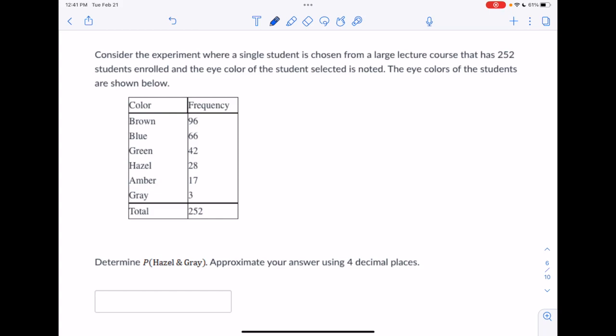Consider the experiment where a single student is chosen from a large lecture course that has 252 students enrolled, and the eye color of the student selected is noted. The eye colors of the students are shown below. So determine the probability that the person selected has hazel and gray eyes. So approximate your answer using four decimal places. So first, in the interest of help but not answers, we're going to change that to the probability of the person having brown and blue eyes.